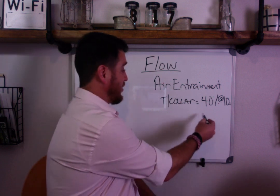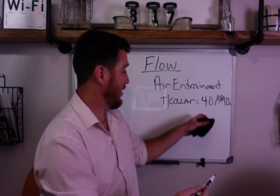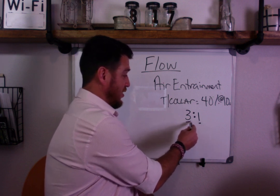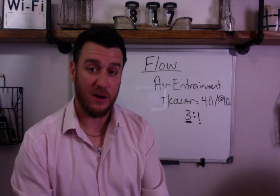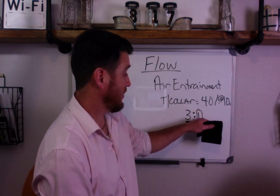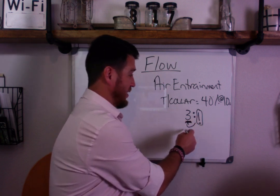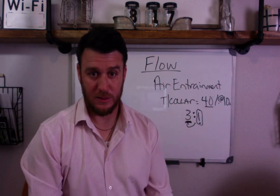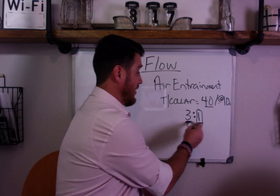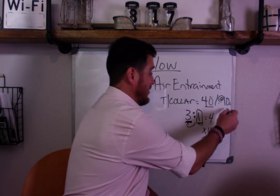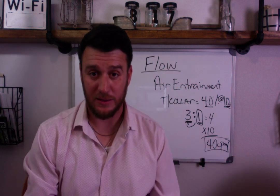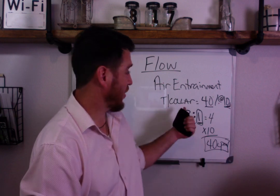Remember, air entrainment devices using Bernoulli's principle draw in room air into the device, therefore delivering a higher total flow. So you have to go to your air-to-oxygen ratio. For 40%, the air-to-oxygen ratio is 3:1, meaning for every one part oxygen you're entraining three parts room air. That gives you four total parts. Multiply four times your set flow of 10, and your total flow actually being delivered to your patient is 40 liters per minute. This concept is what makes a trach collar a high-flow device.